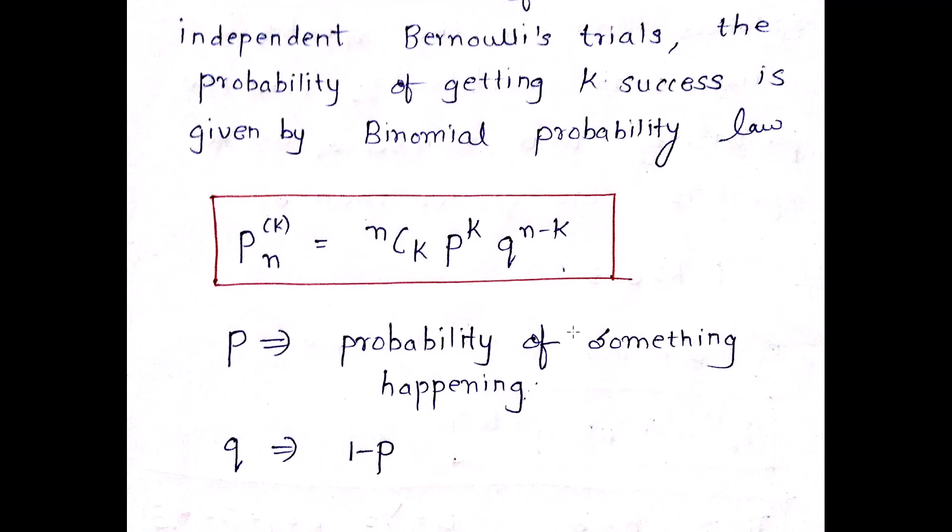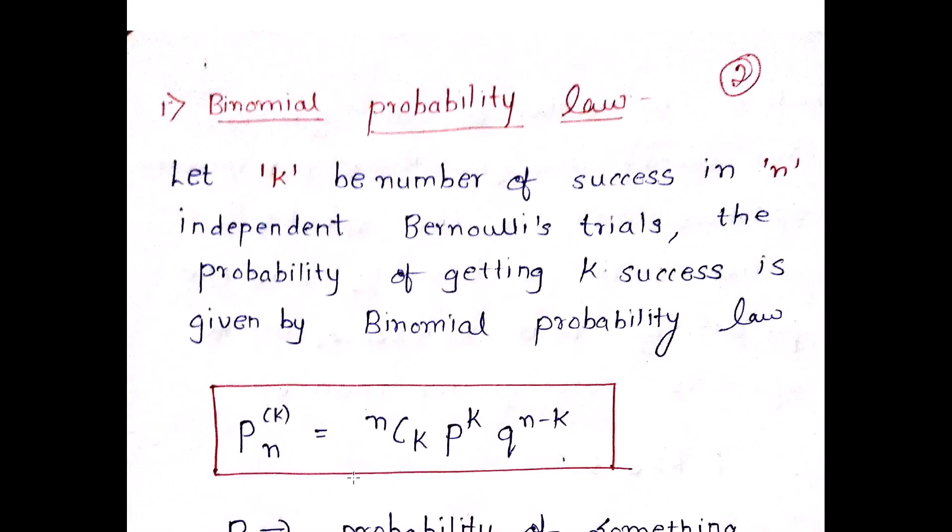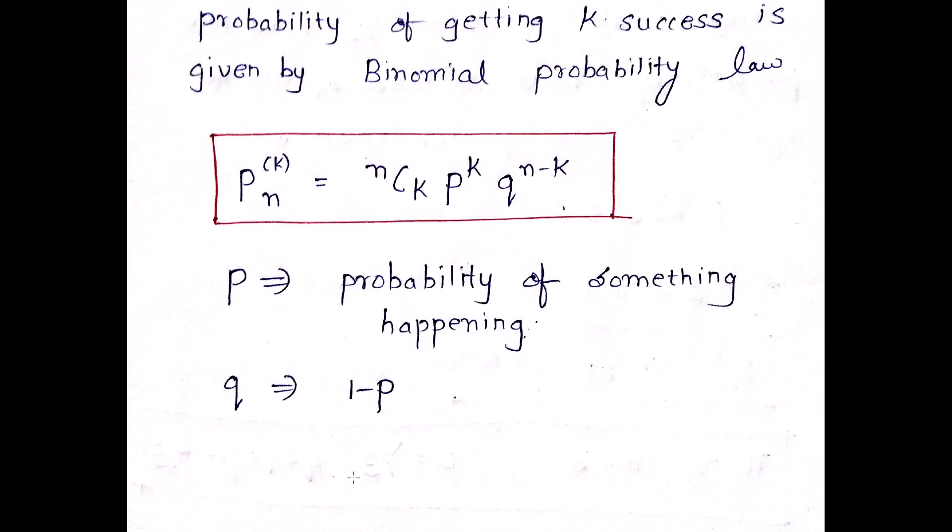Now p stands for probability of something happening and q is equal to 1 minus p. So just remember this formula very well. It is a very important formula. The formula for finding out k success in n trials is given as nCk, p raised to k, q raised to n minus k, where p is the probability and q is 1 minus that probability.